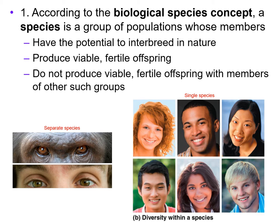In the picture to the right, that is a single species — all of those individuals can potentially interbreed. They can produce viable, fertile offspring, and they cannot produce viable, fertile offspring with something else, such as a chimpanzee. In the other image, we have separate species: a chimpanzee and a homo sapien, or human.